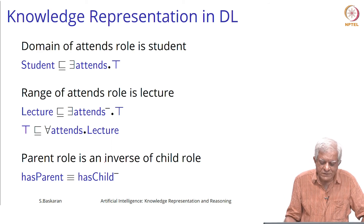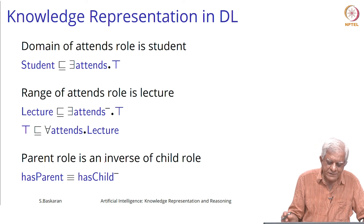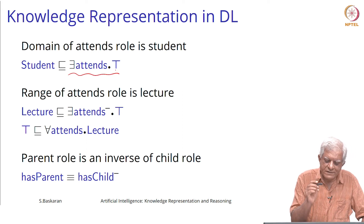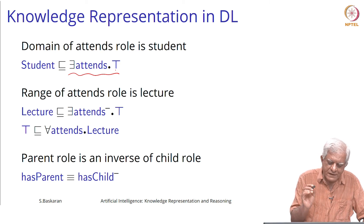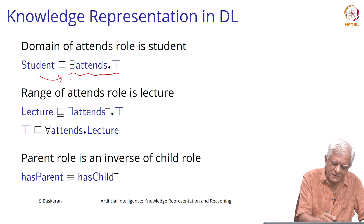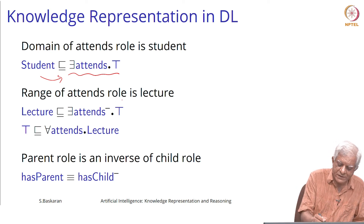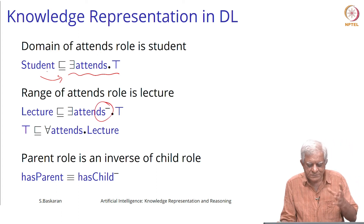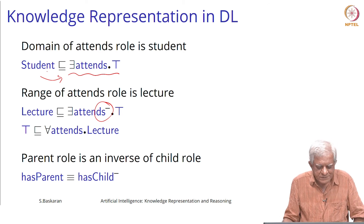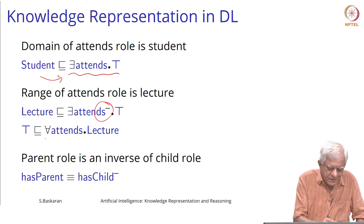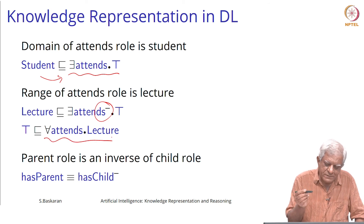You can say that the domain of the attend role is students — all the individuals who attend something, and students belong to that concept. Likewise for range: the range of the attend role is lecture. We take the inverse role and use a similar statement to say that a lecture is something that is attended by someone. We can also say that the range of 'attends' is always a lecture — that you attend only lectures.